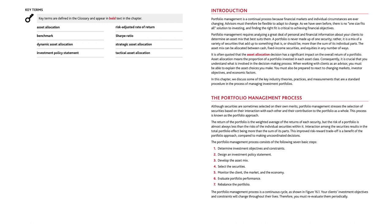The asset mix can be allocated between cash, fixed income securities, and equities in any number of ways. It is often quoted that the asset allocation decision has a significant impact on the overall return of a portfolio. Asset allocation means the proportion of a portfolio invested in each asset class. Consequently, it is crucial that you understand what is involved in the decision-making process.